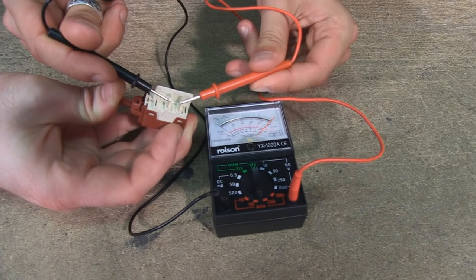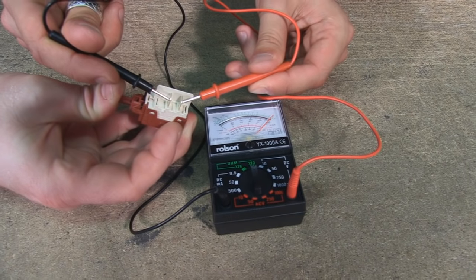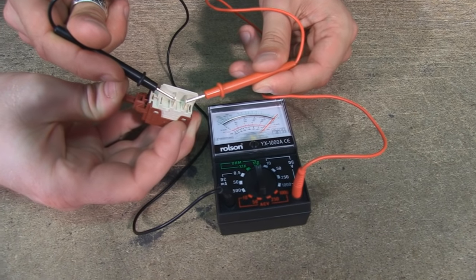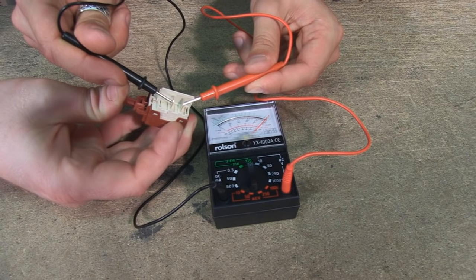The reading for a switch with continuity needs to be zero and anything above this means the switch is faulty. In this case, this switch is working fine.